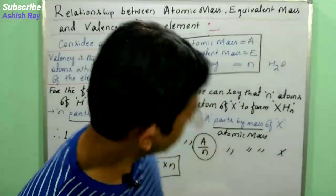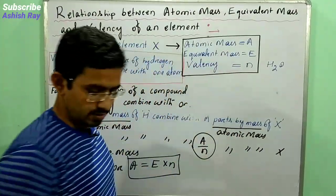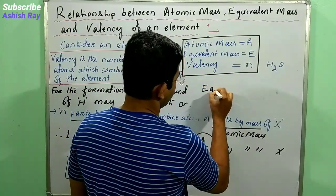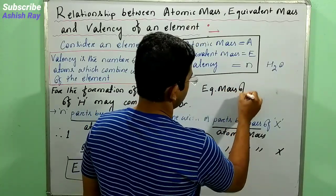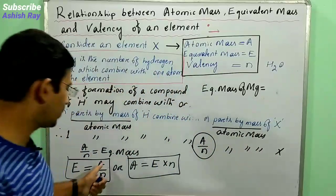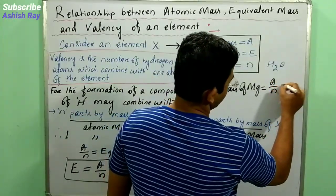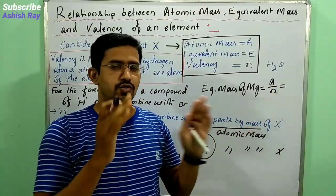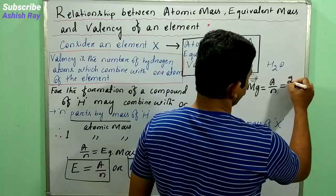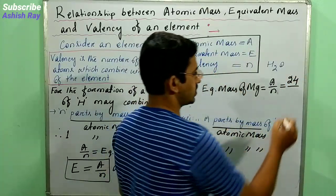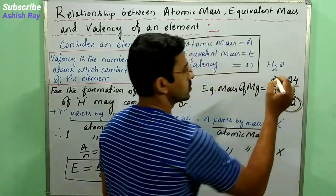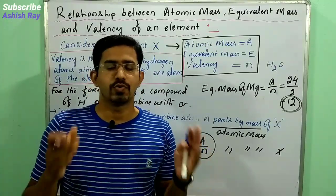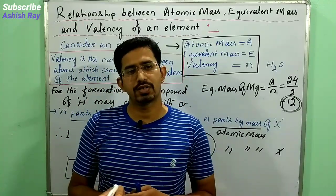For example, what is the equivalent mass of magnesium? Equivalent mass of Mg equals E equals A/N. The atomic mass of Mg is 24 and the valency of Mg is 2, so the equivalent mass equals 24 divided by 2, which equals 12. So 12 is the equivalent mass of Mg.